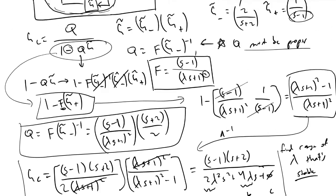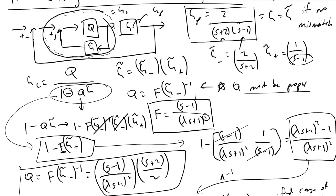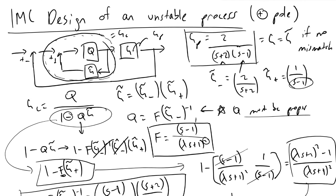This concludes how we're able to use IMC when dealing with positive poles and an unstable process to design a proper controller. I hope you guys find it useful — let me know if you have any questions, and thanks for watching.